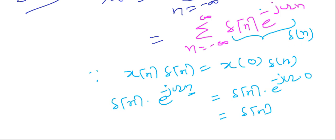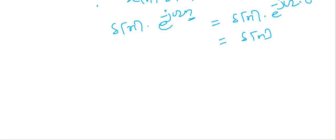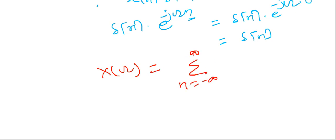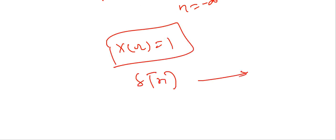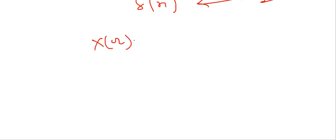Therefore, X(ω) = summation over n from -∞ to +∞ of δ(n), and we know that the summation of δ(n) from -∞ to +∞ equals 1. So X(ω) = 1. This means the DTFT of δ(n) is 1 — it is constant everywhere. We can write X(ω) = 1 with angle 0.